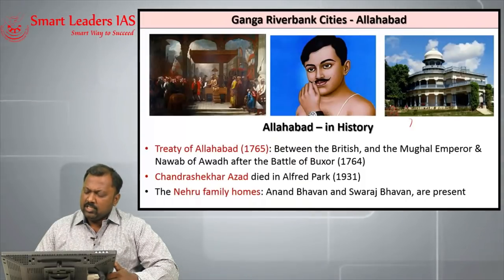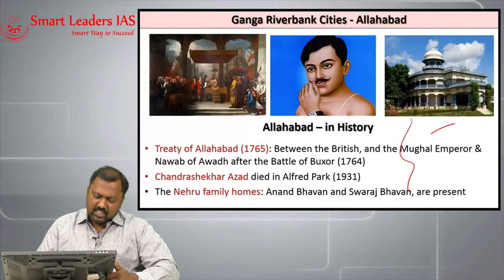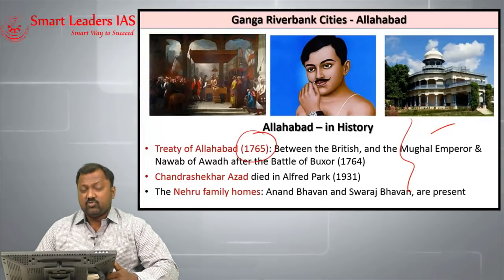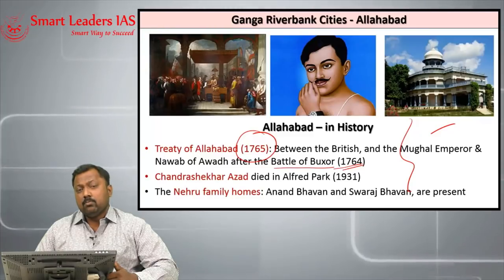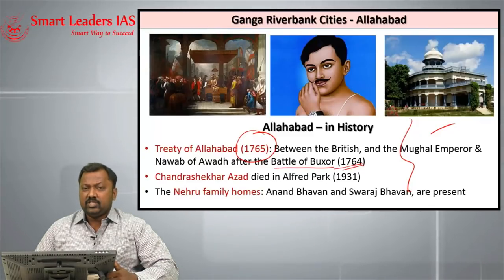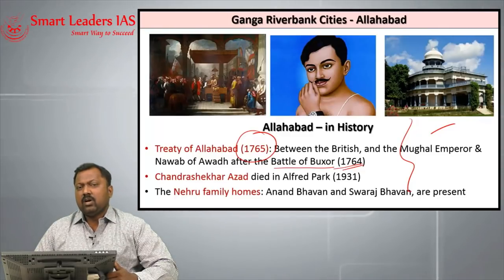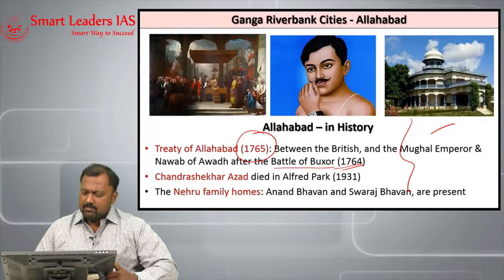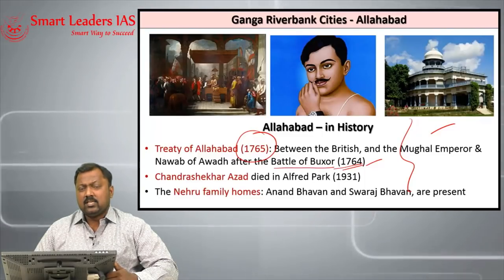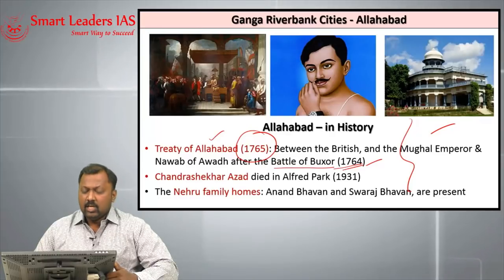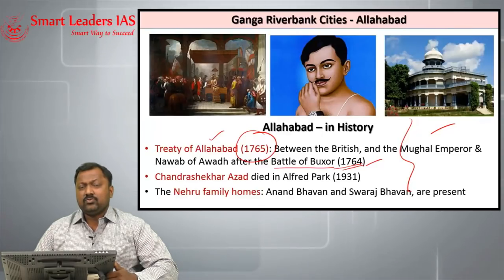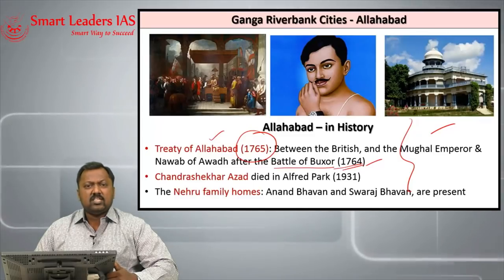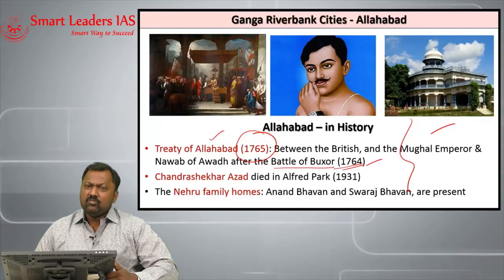In modern Indian history, the Treaty of Allahabad was signed in 1765 after the Battle of Buxar, in which the British emerged victorious, defeating the ruling house of Bengal, the ruling house of Awadh, and Mughal emperor Shah Alam II. After the battle, the British got the Treaty of Allahabad signed by Shah Alam II, through which Shah Alam II gave the right of Diwani in Bengal, Bihar and Odisha to the British, after which they established the dual government in Bengal.